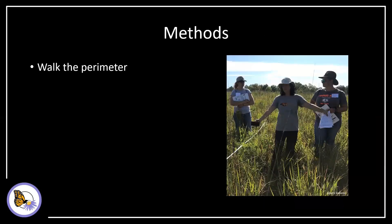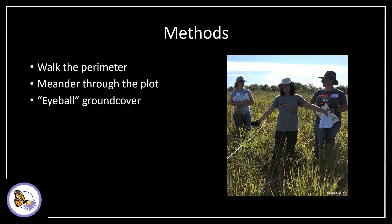Conduct this activity the first time as you set up your plot, walking the perimeter. Also, meander through the plot to better assess the plant cover. You'll use ocular estimates, or eyeball the area data, to estimate the proportion of plot covered by certain plant types. If the site is managed for conservation or agriculture, you should contact the land manager to complete the conservation management history form.